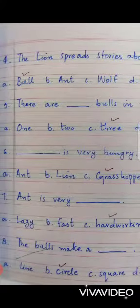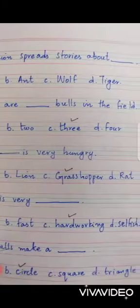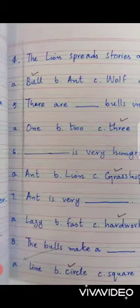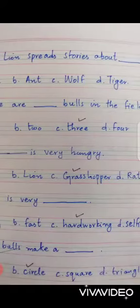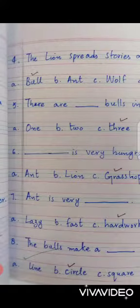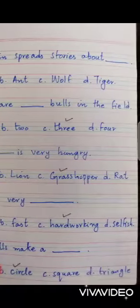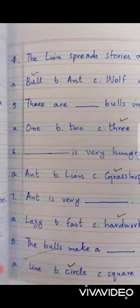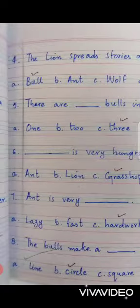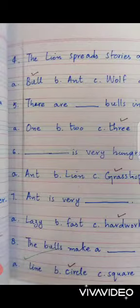Number five: there are blank bulls in the field. Options: one, two, three, four. Correct option is three. Number six: blank is very hungry. Options: ant, lion, grasshopper, rat. Correct option is grasshopper.